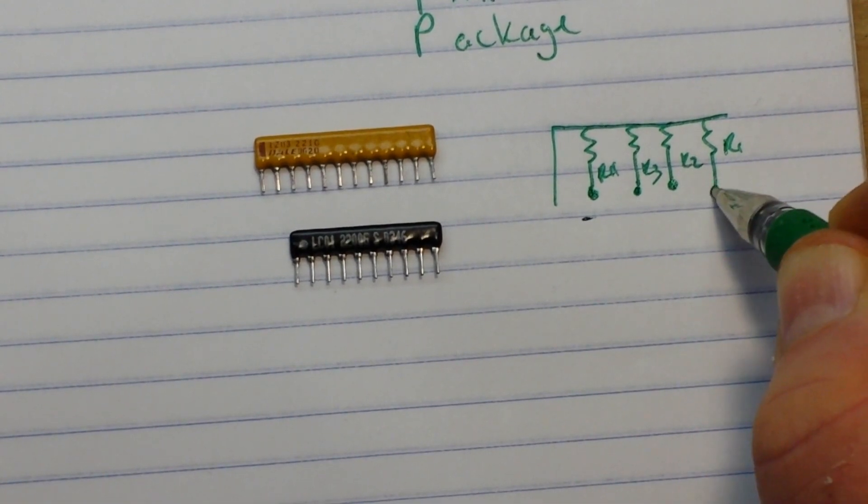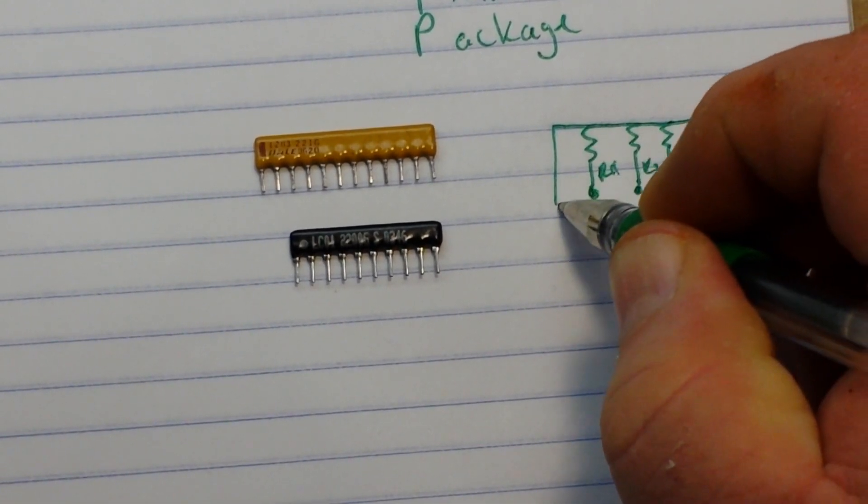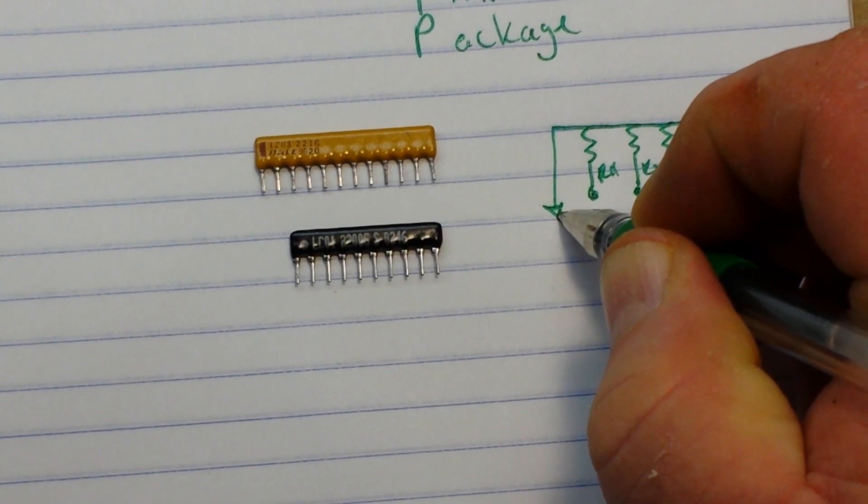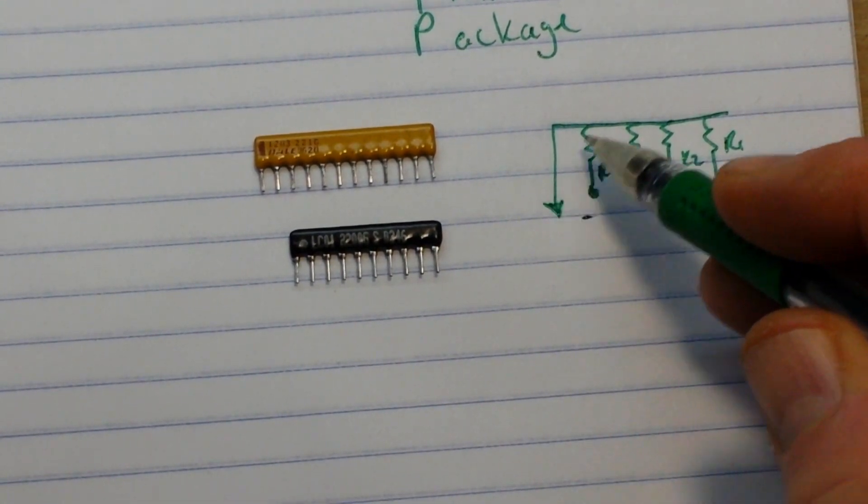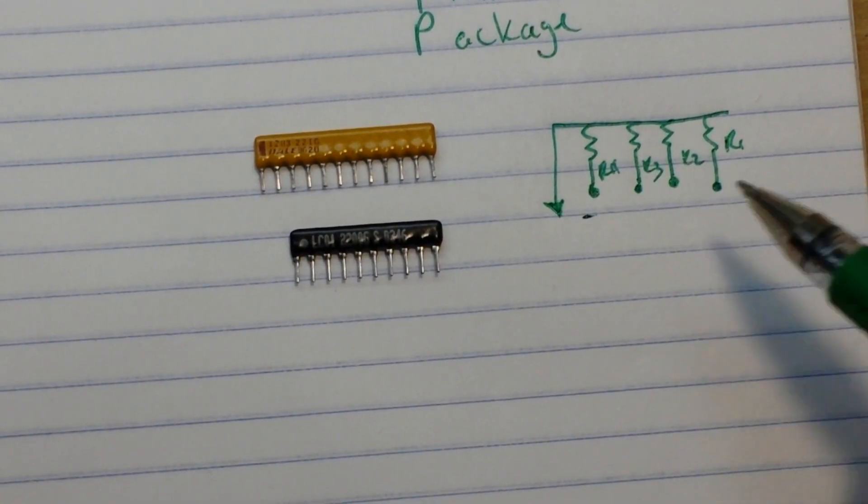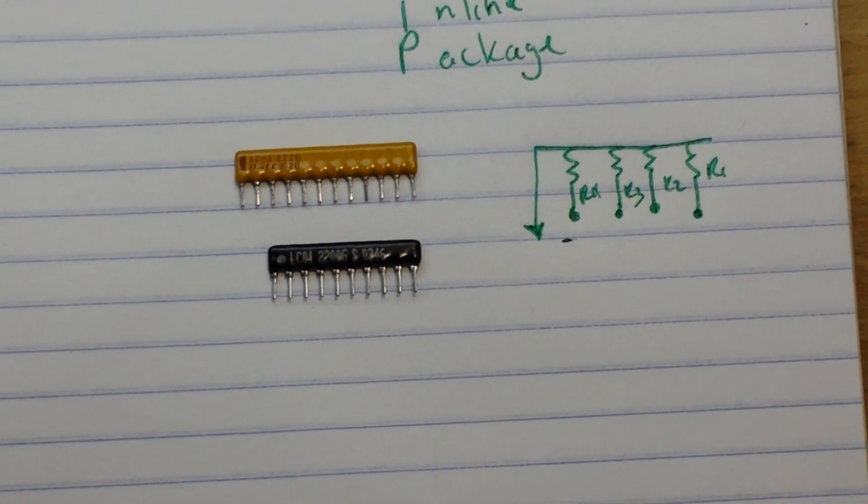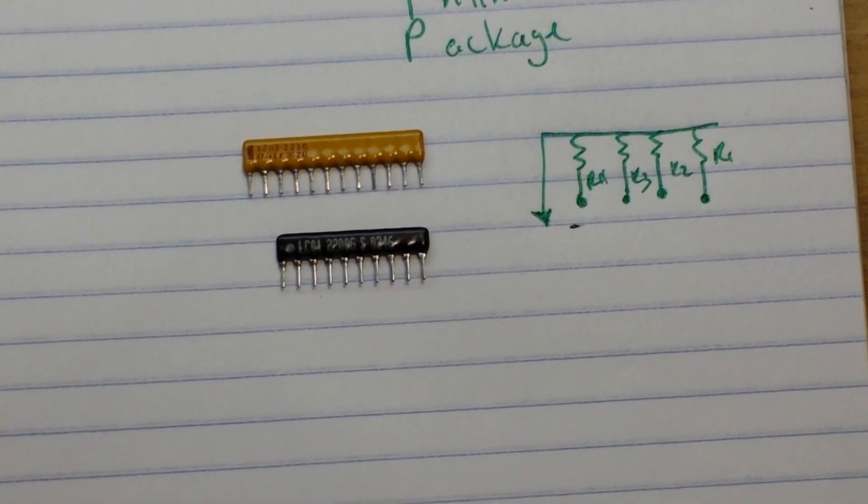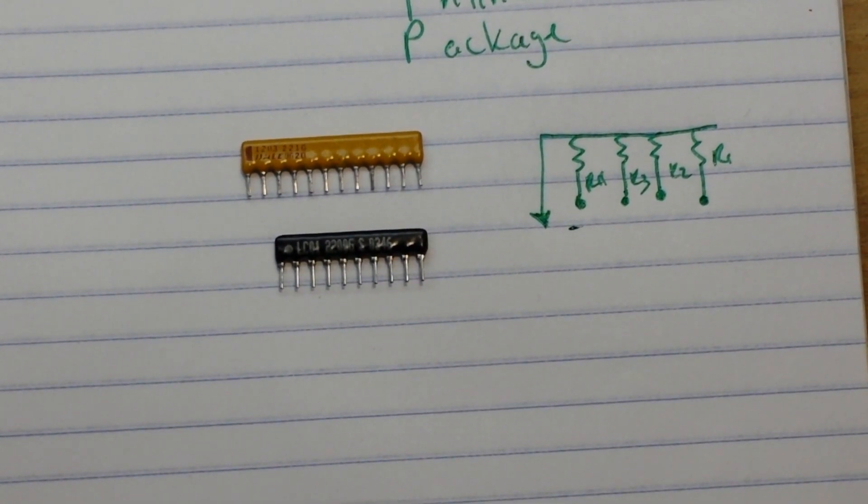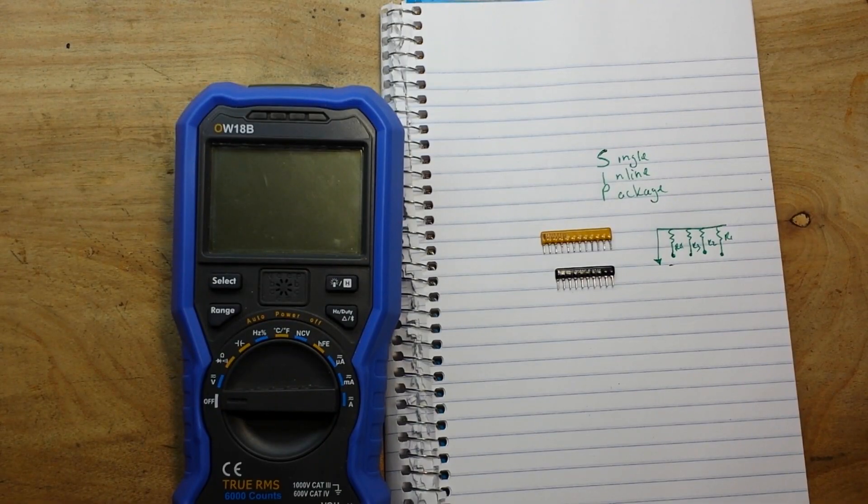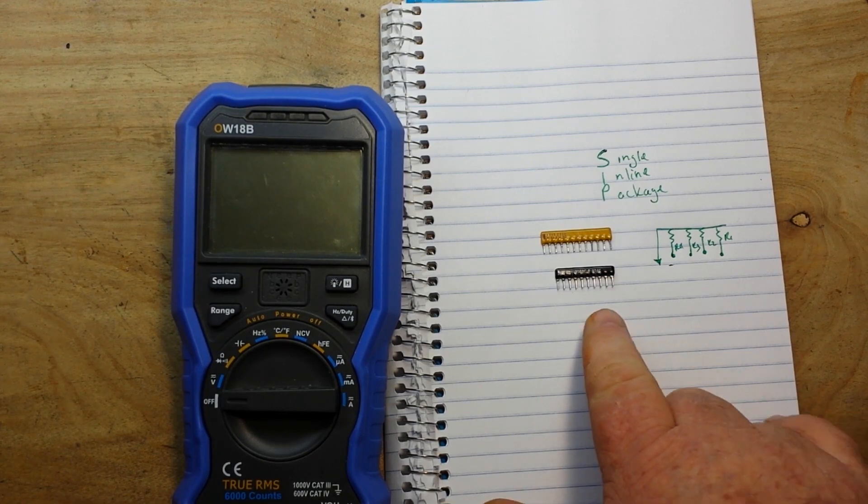And then we have this pin over here which is common to all of them. So it's simply a resistor network, there's nothing special here, but this is a really cool device and it's a nice time saver. Now these SIP packages come in all different sizes.